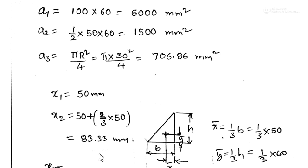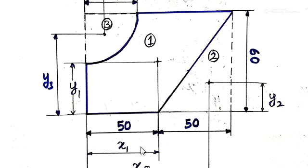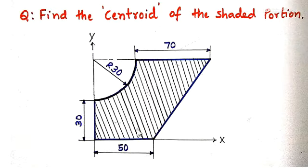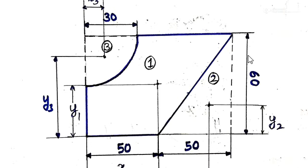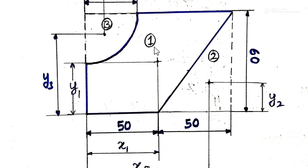Next we find x1, x2, x3. The shaded area is placed in the first quadrant with positive x and y directions. For Area 1, the rectangle 100 by 60, x1 is the distance of its centroid from the y-axis. Since total width is 100, half is 50, so x1 = 50 mm.